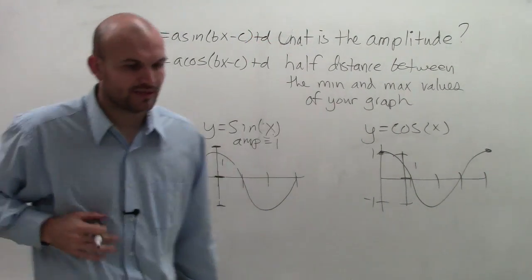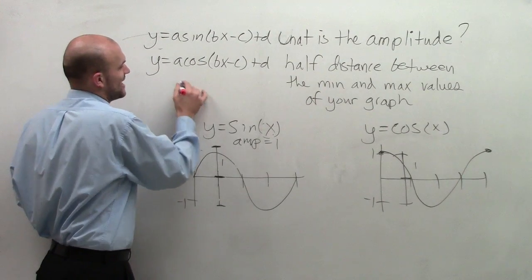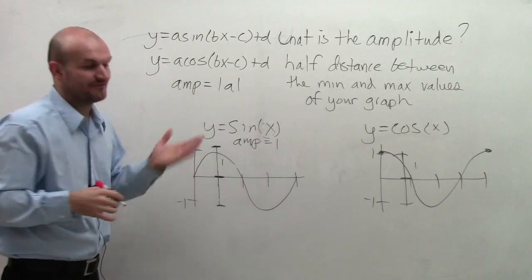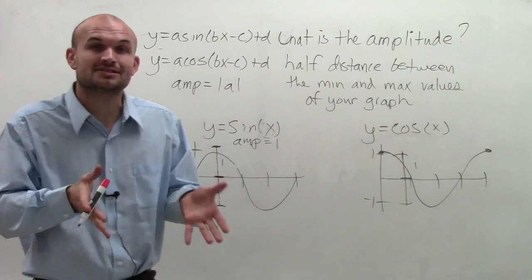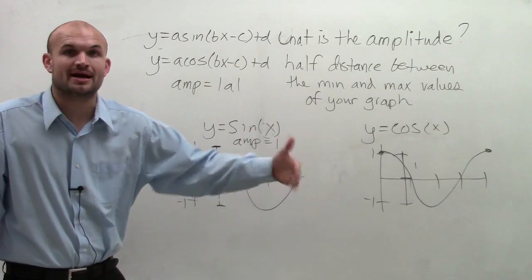So when looking at the amplitude, what we're going to determine, the amplitude is going to be the absolute value of our a function, or of our a. And a is going to be your coefficient of your function, or what is going to be multiplied by a function.